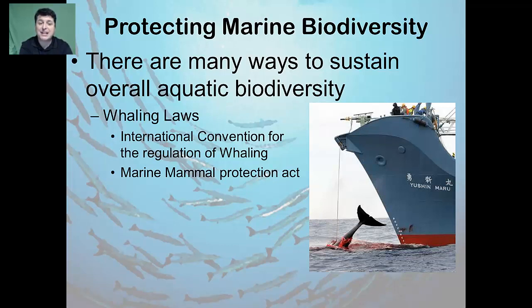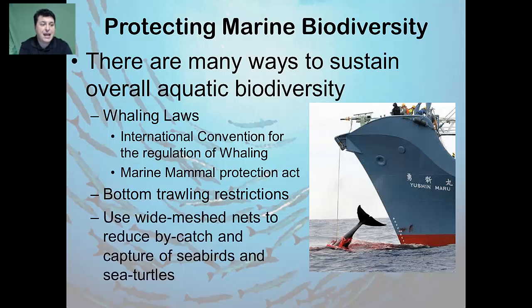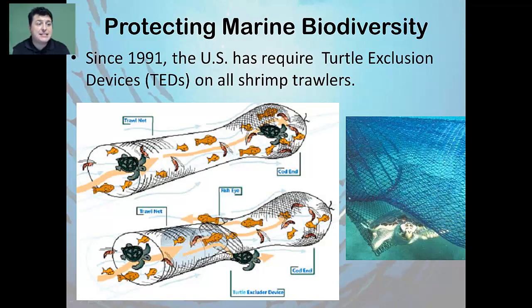The establishment of bottom trawling restrictions can protect fragile bottom habitats from degradation. How we catch fish using nets can also be modified to reduce bycatch and the capture of seabirds and sea turtles. In fact, since 1991, the U.S. has required the use of turtle exclusion devices, or TEDs, in all shrimp trawlers.